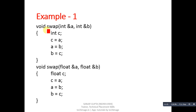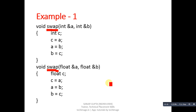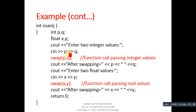Both functions have the same name, swap, but see the types of arguments: here the two arguments are of integer type, and here the two arguments are of float type. But the definitions of both functions are the same — both are swapping the values of two variables. This example shows that we can use the same name for functions but their type or quantity of arguments must be different. In the main function, two variables p and q are of integer type and x and y are of float type.